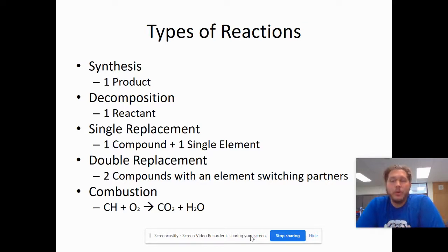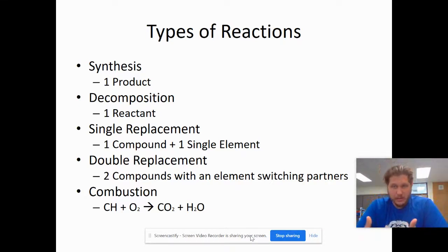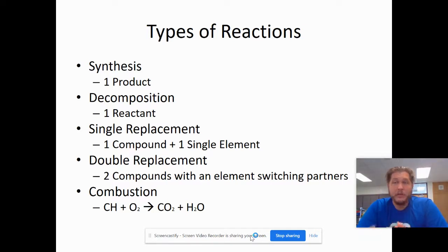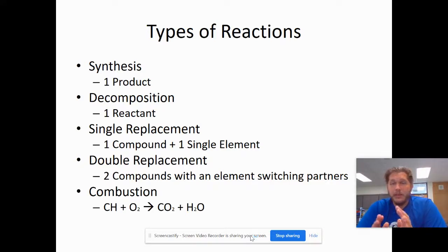The past couple of days we've been working with identifying the types of chemical reactions. I've boiled this down to the bare minimum. Our five types of chemical reactions — first, we have synthesis, which means we have one product: one compound to the right of the yield symbol.